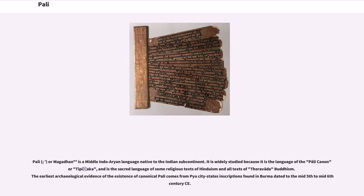Pali, or Magadon, is a Middle Indo-Aryan language native to the Indian subcontinent. It is widely studied because it is the language of the Pali canon or Tipitaka, and is the sacred language of some religious texts of Hinduism and all texts of Theravada Buddhism. The earliest archaeological evidence of the existence of canonical Pali comes from Pew city-state inscriptions found in Burma, dated to the mid-5th to mid-6th century CE.